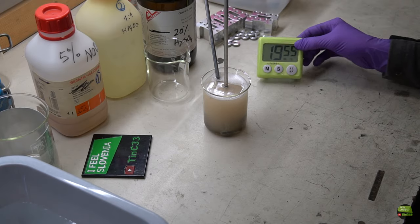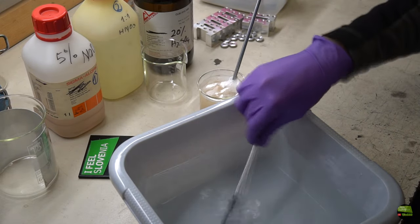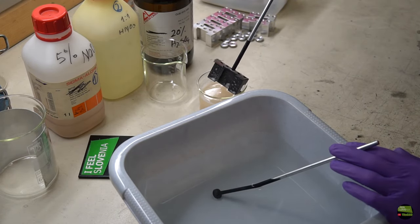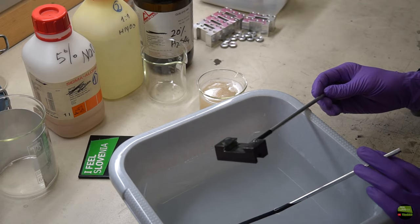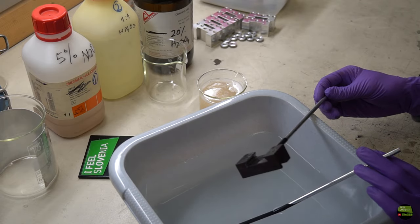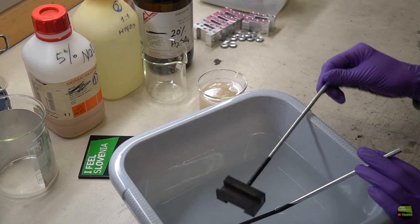After about 20 minutes, I take the part out of sodium hydroxide and rinse in distilled water. As you see, the parts become completely black. It depends on aluminum alloy type. Some types of aluminum become completely black, while others not at all.